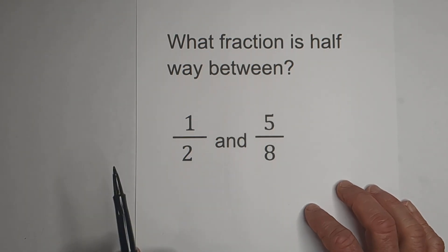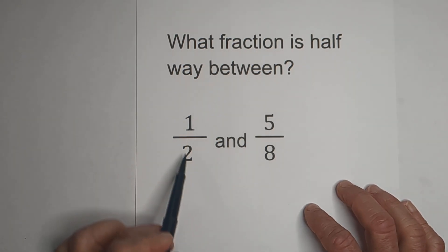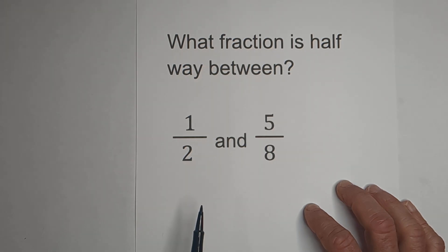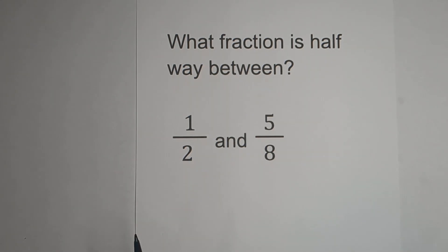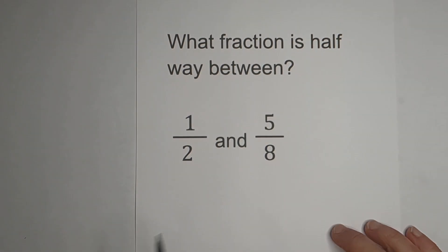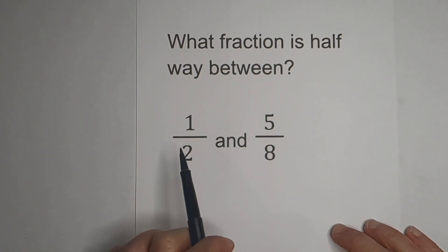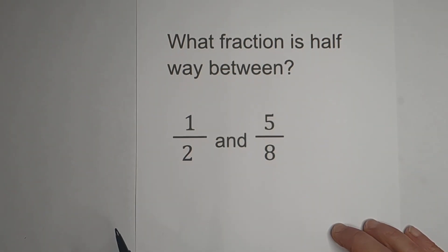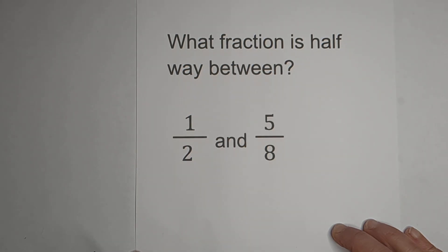What we're going to do is add these together and then divide by 2. Since they do not have a common denominator, we need to find a common denominator, rename the fractions, add, then divide by 2.